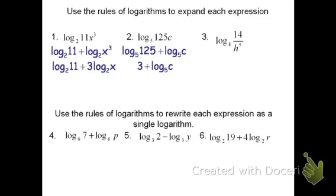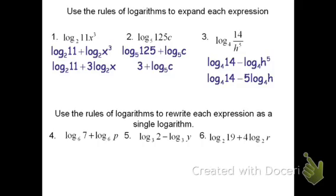For the last one, we're going to use the log of a quotient rule. We'll say this is log base 4 of 14 minus the log base 4 of h to the fifth. That h to the fifth piece I probably want to rewrite, so it's log base 4 of 14 minus 5 times log base 4 of h.